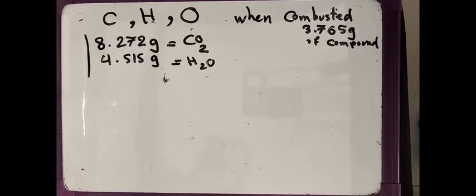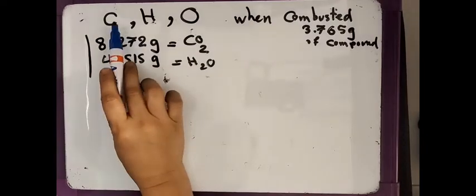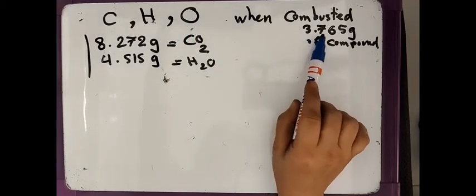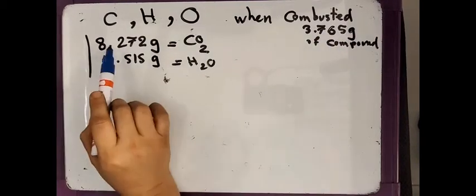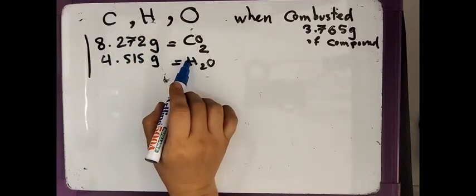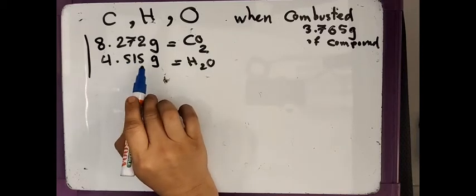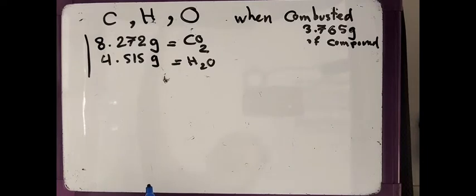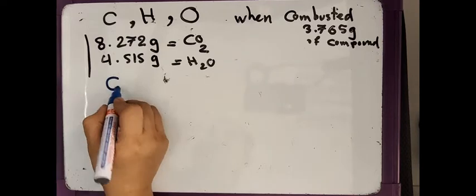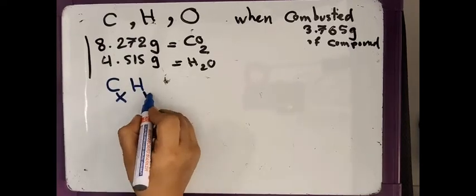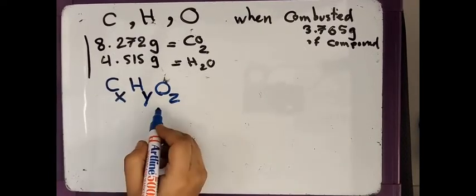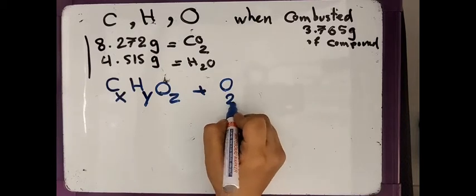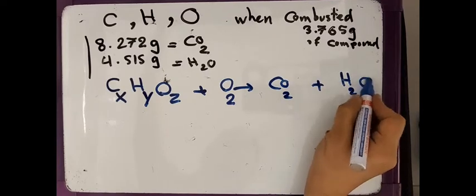When we have a combustion reaction, one example asks us: a compound consisting of carbon, hydrogen, and oxygen — 3.765 grams of it is combusted and produces 8.272 grams of carbon dioxide and 4.515 grams of water. We are asked to find the empirical formula. The unknown compound is combusted with O₂ to produce CO₂ plus water.